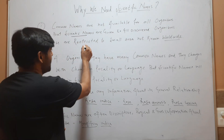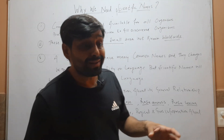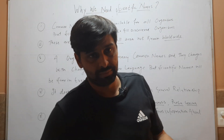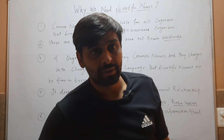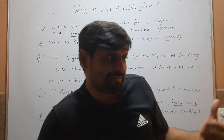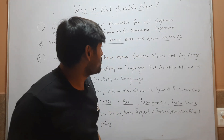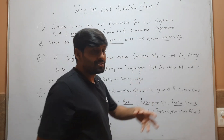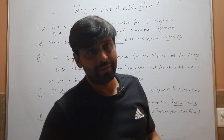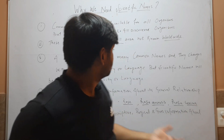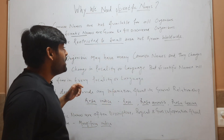The second reason is that common names are restricted to a small area. Common names are restricted to only a small area, or you can say restricted to a language. When the language changes, common names also change. So these are not known worldwide — common names cover only a small geographical area and are not known worldwide.